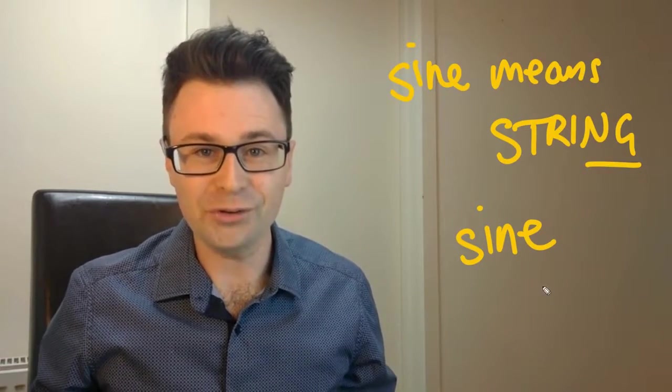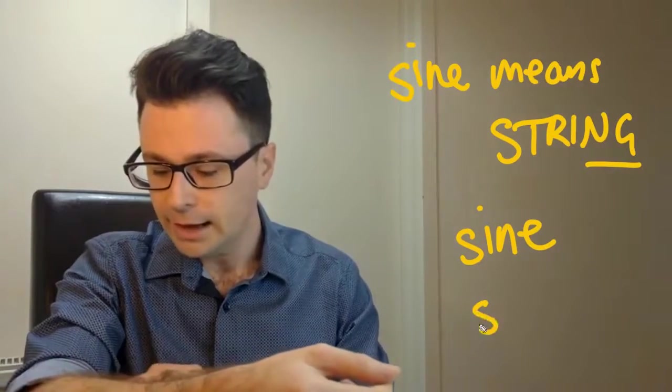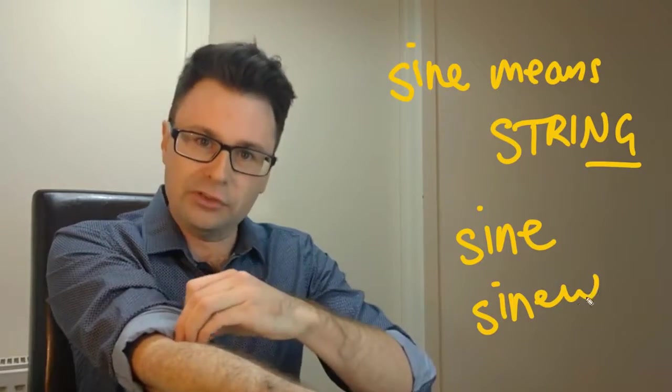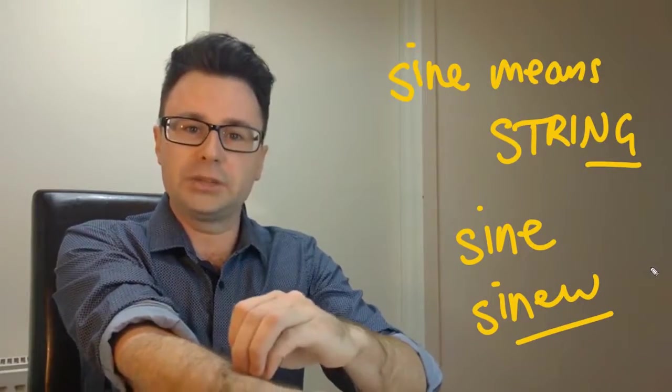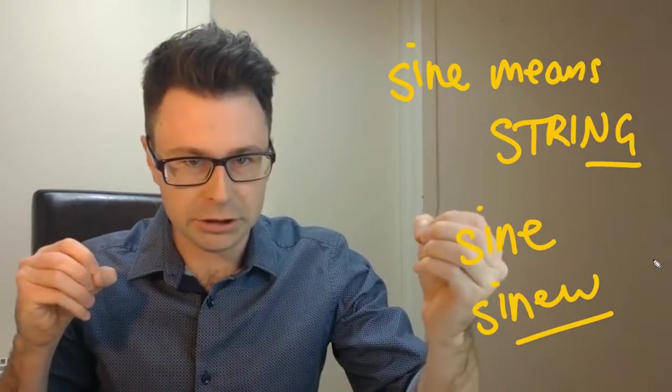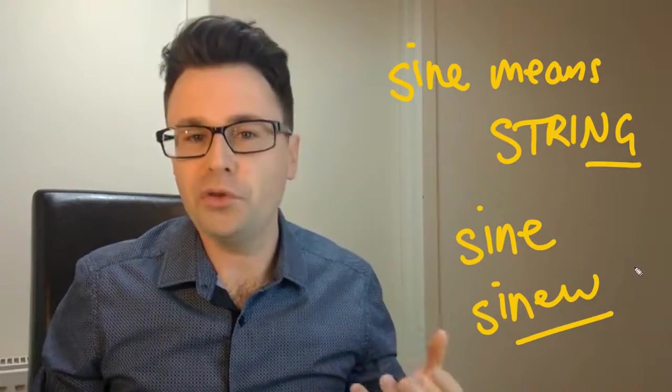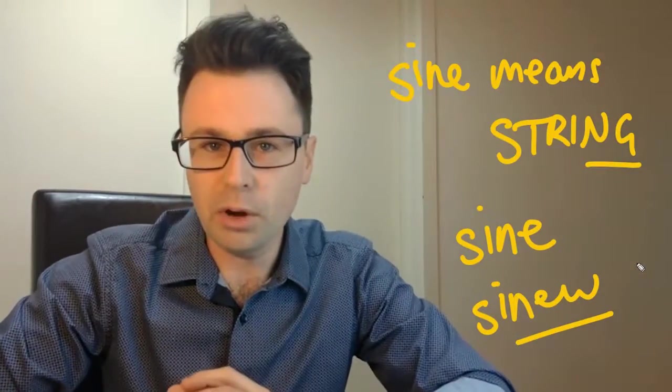And here's something which will help you relate to it a little bit better. It doesn't work with a lot of methods students, but yourself might like it. You know, sinew, sinew is a tendon, right? So a muscle attached to a bone. That's a little bit like a string, right? And sinew and sine are two very similar words.